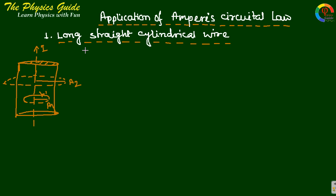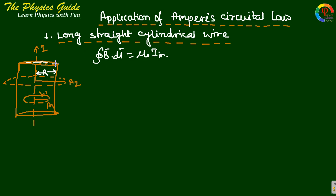This is the application of Ampere's Circuital Law for a long straight cylindrical wire. Ampere's Circuital Law states that the closed loop integral of B dot dl equals mu-naught times I enclosed. From this equation we can find the magnetic field B. Let a cylindrical wire of radius capital R carry a continuous current I, with current density J equals I over pi R squared.